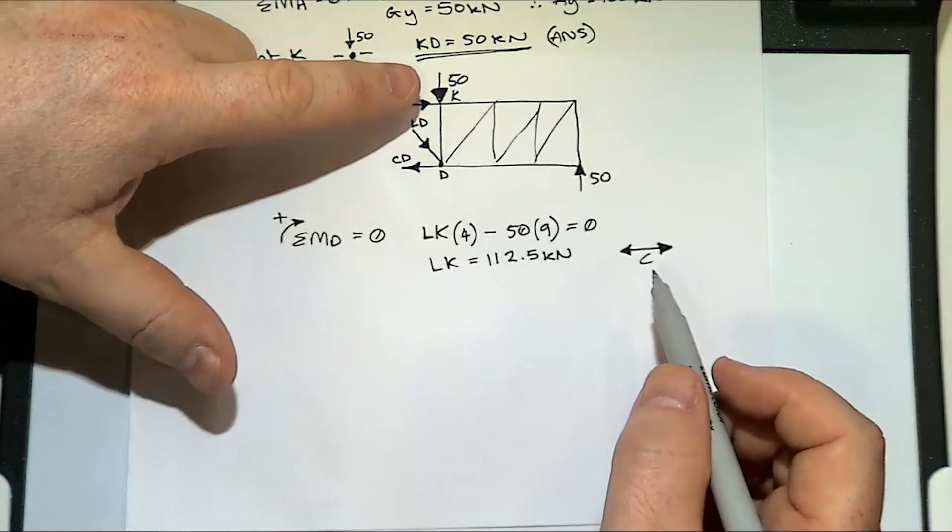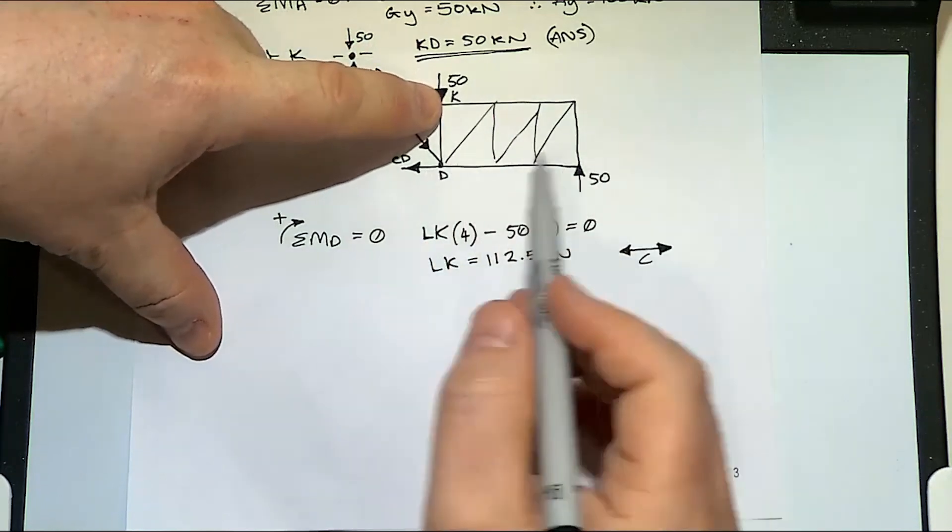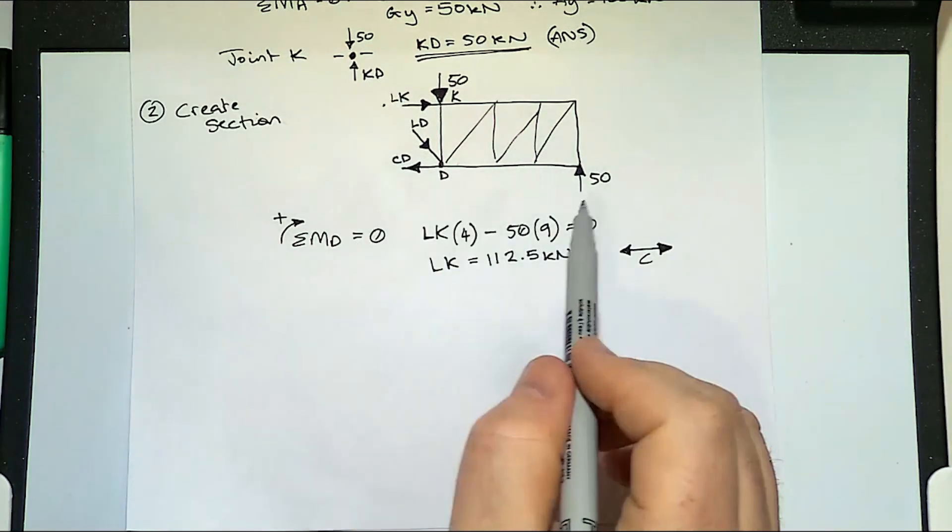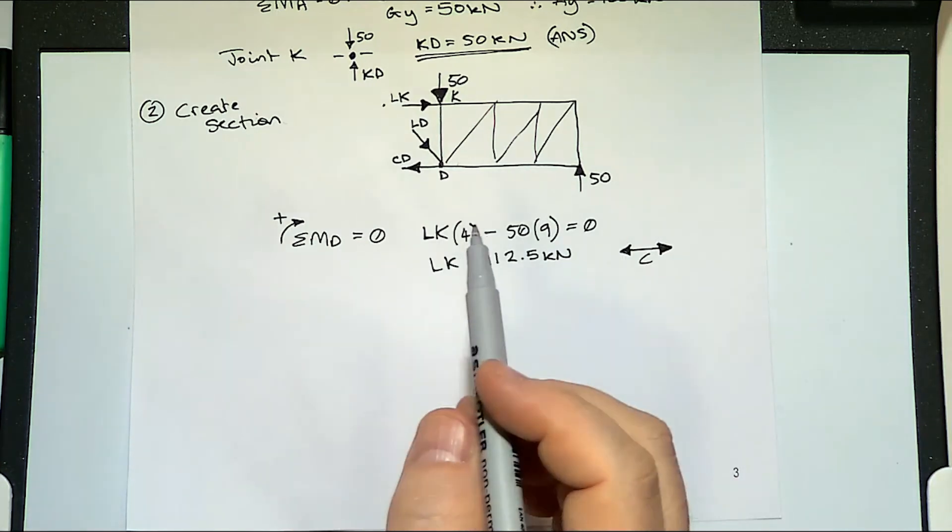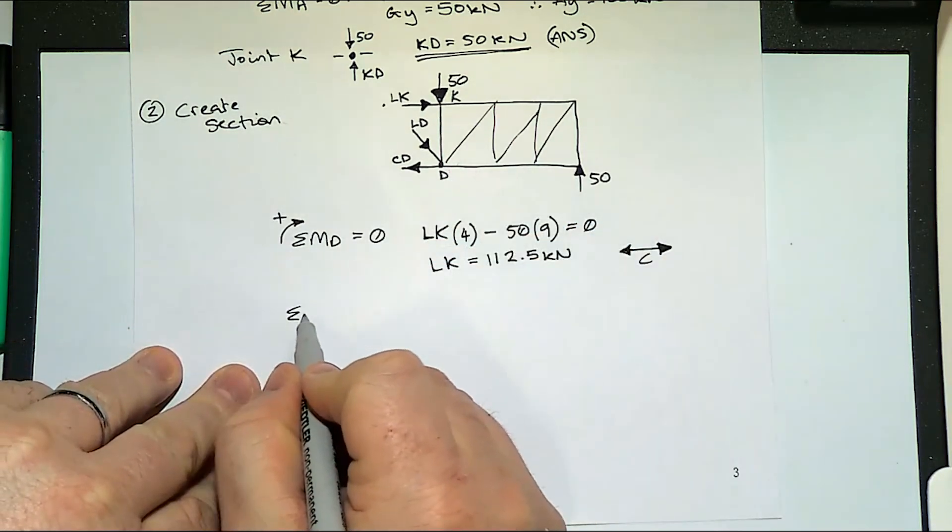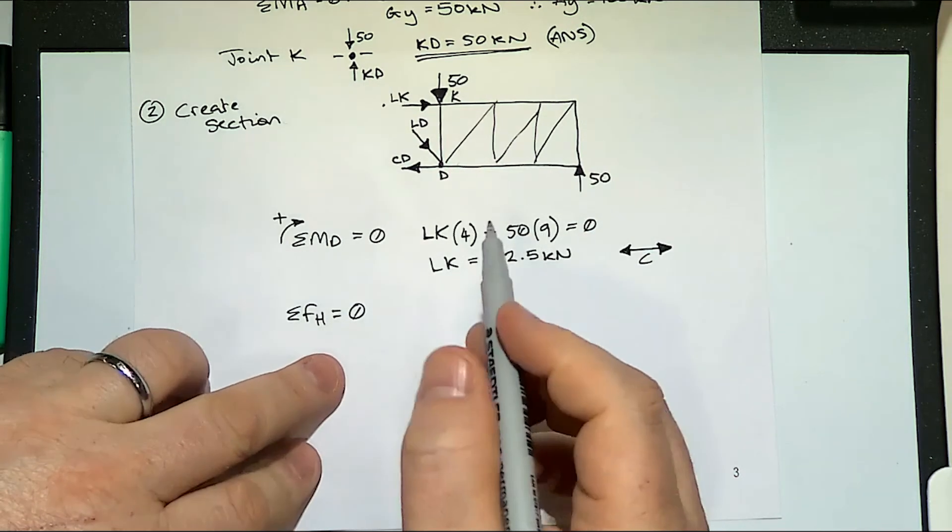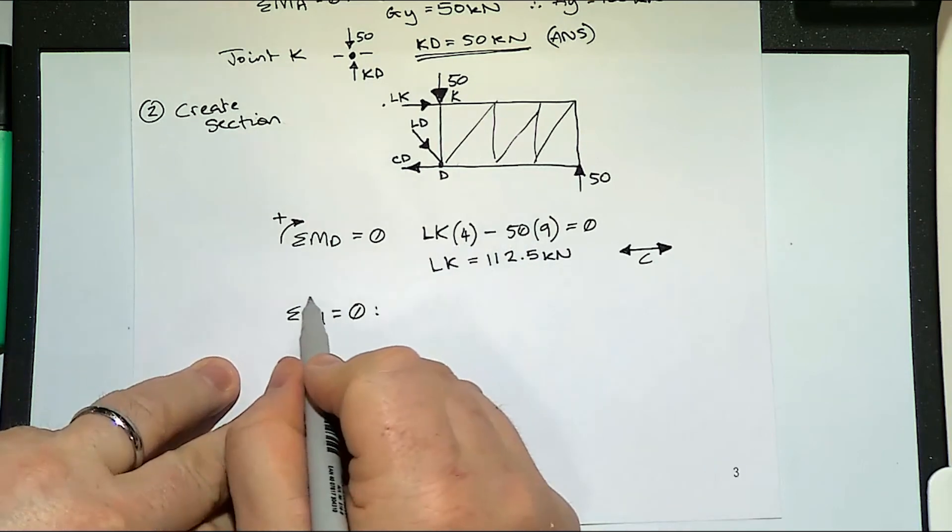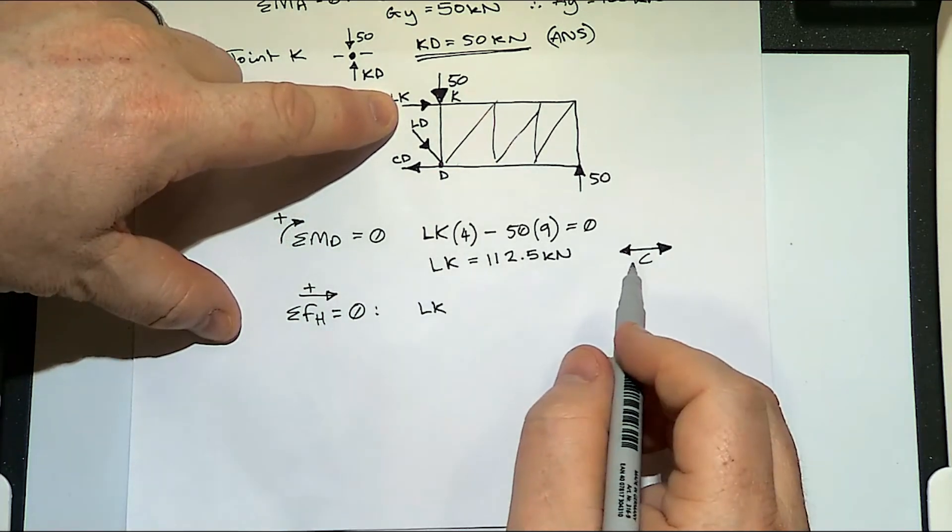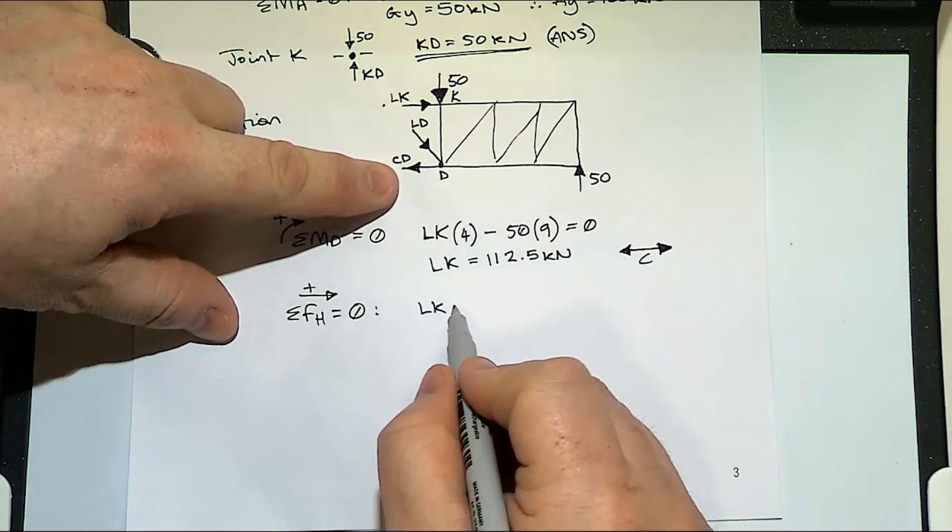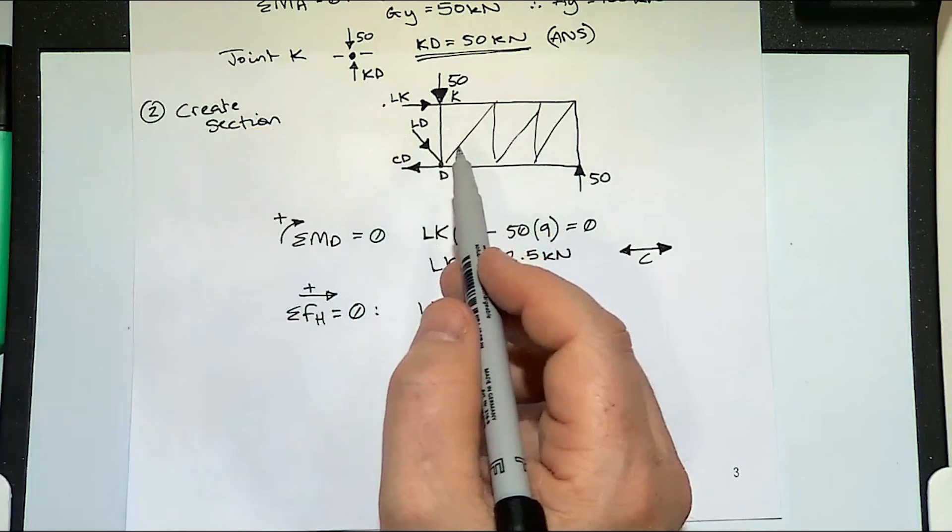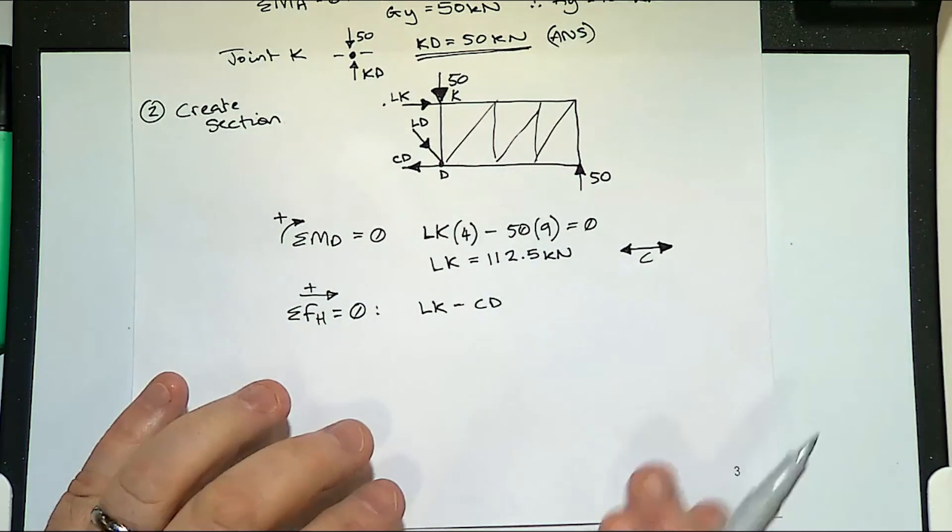If we take moments around K we'd have CD and LD on a strange angle. You could also look horizontally or vertically. Let's write some of these formulas out so if we did sum of forces horizontal, we've got and we said that everything's going to the right is going to be positive we've got our LK and going the other way we've got this CD so minus CD then we've got this LD. Now how much of that LD acts horizontally? Now this is where you've got to work out the angle, this angle here.